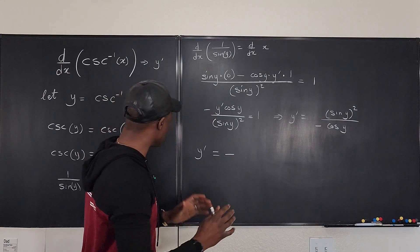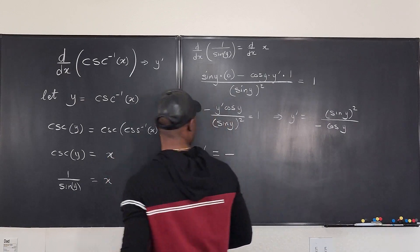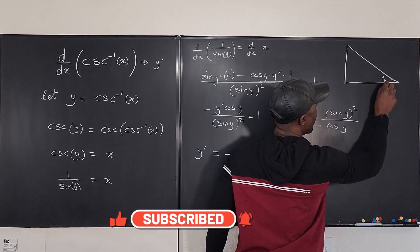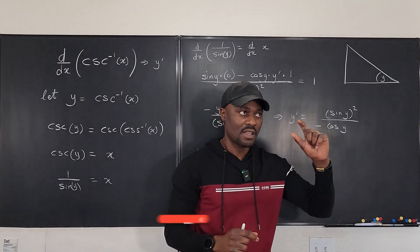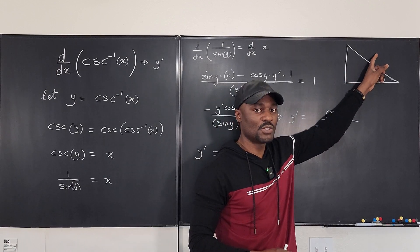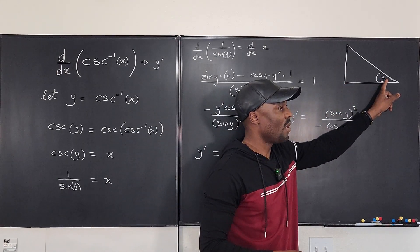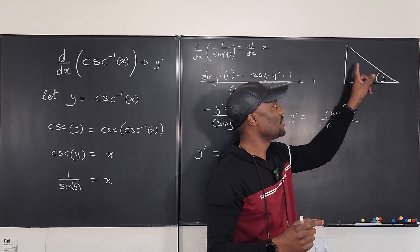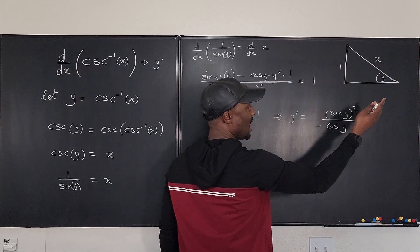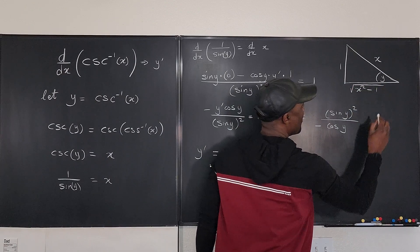We know that cosecant y equals x, so let's make a triangle. The angle is y. Cosecant is hypotenuse over opposite (the reciprocal of sine). Since cosecant y equals x, that's x over 1, so the hypotenuse is x and the opposite side is 1. By the Pythagorean theorem, the adjacent side is the square root of x squared minus 1.